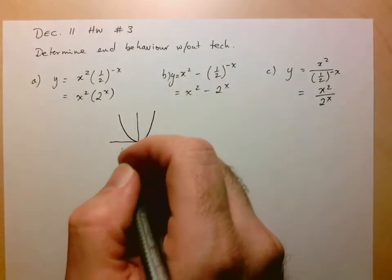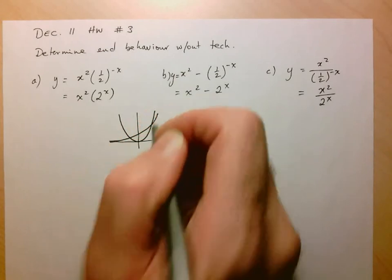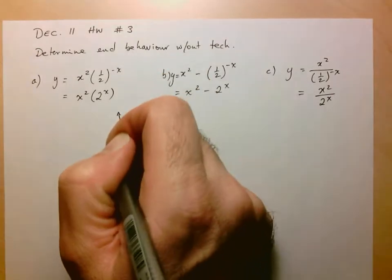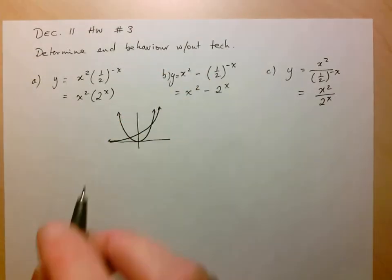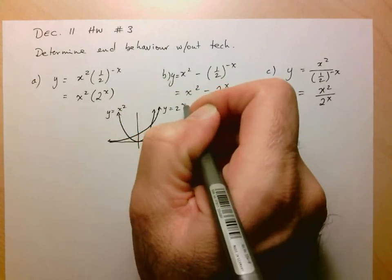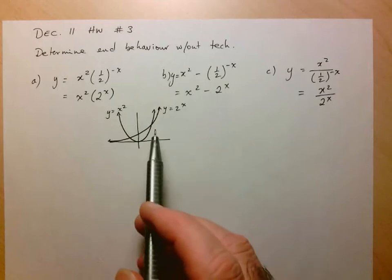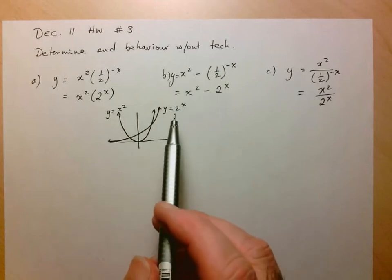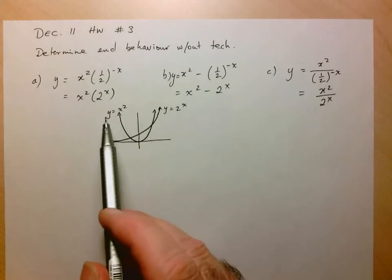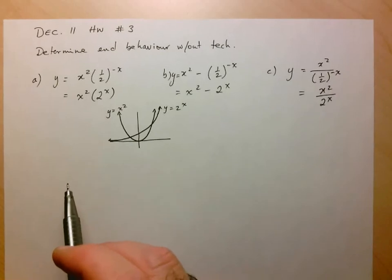So we've got y equals x squared and y equals 2 to the x. We know that 2 to the x grows and decays more quickly than any polynomial — by default, it grows and decays more quickly than y equals x squared.